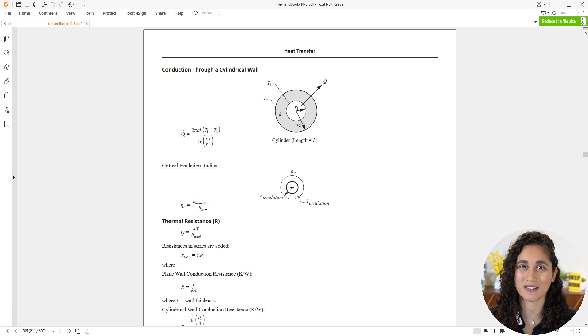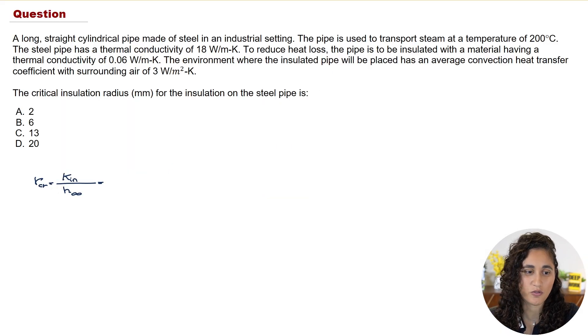So let's go ahead and write the equation down and start plugging in the numbers. Now let's go ahead and solve for the radius. So we have the thermal conductivity of insulation, which was given as 0.06. So let's go ahead and write that down. I'm also going to write the unit as well, and we're going to make sure at the end they cancel nicely. And we might have to do a small conversion so that we can get millimeters. And then we're going to divide it by h infinity, which is the convection heat transfer coefficient of the surrounding, which was given as 3.